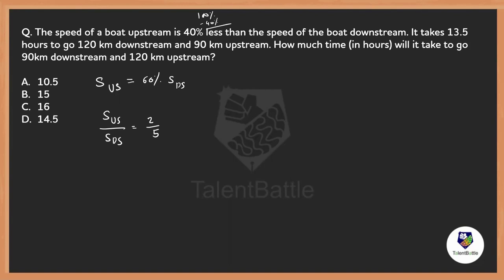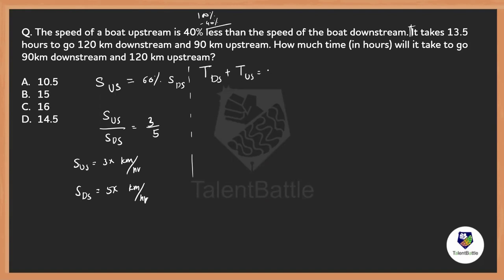So speed of upstream is 3x kilometers per hour and speed of downstream is 5x kilometers per hour. Now we are also given that it takes 13.5 hours to go 120 kilometers downstream and 90 kilometers upstream. So the equation is: time taken for downstream plus time taken for upstream equals 13.5 hours. Time is distance divided by speed, so distance of downstream is 120 divided by speed of downstream which is 5x.